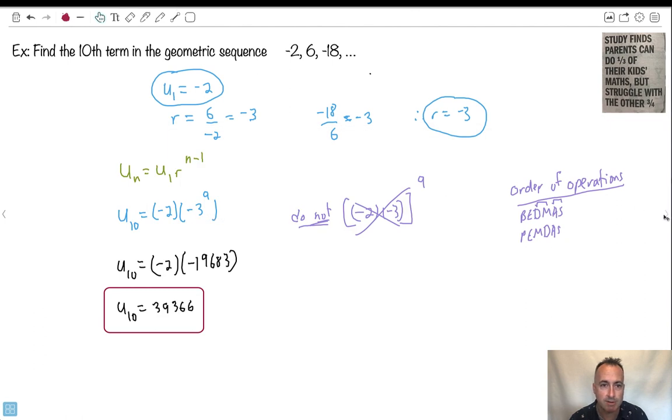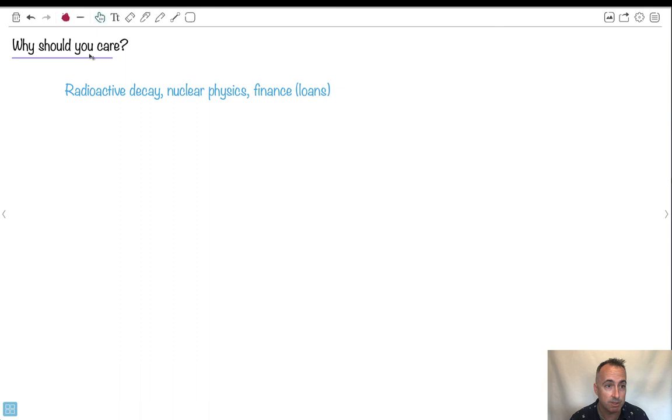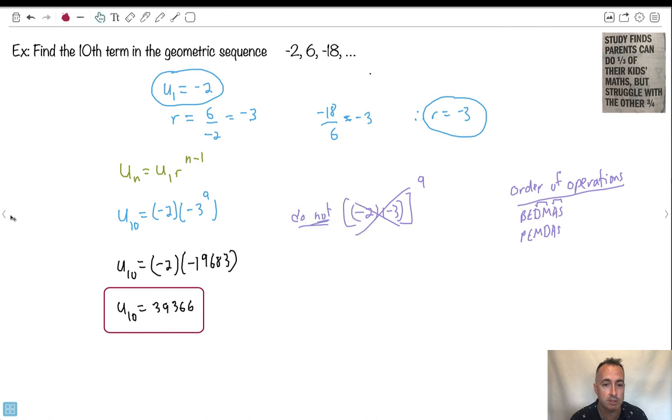Now, why is this stuff right here actually useful? I mean, we use geometric sequences all over the place. Nuclear physics and finance for loans when we do this thing called compound interest, radioactive decay. I mean, this stuff actually does show up. So although it seems really annoying with just dumb numbers, it's actually used for stuff later on.